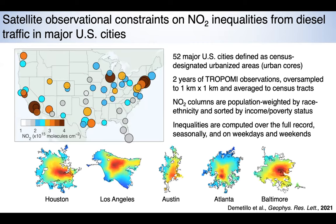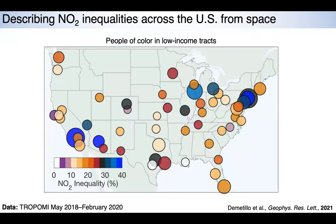I'm going to show two analyses. First, we scale up our Houston work across the country, looking at 52 cities. We population-weight these satellite observations by race, ethnicity, and poverty status and compute inequalities as the difference between groups — for example, African Americans and non-Hispanic whites in each city. This gives a sense of the extent of inequalities across the country. NO2 inequality combined with race, ethnicity, and income shows differences in population-weighted NO2 pollution averaging about 30%, but as high as 40 to 50% in very polluted cities, particularly Los Angeles, Phoenix, New York City, Newark, and Chicago.